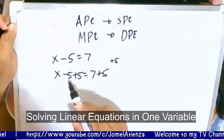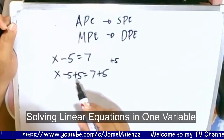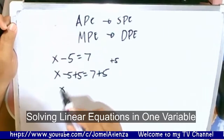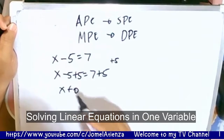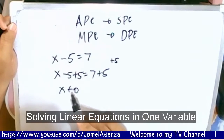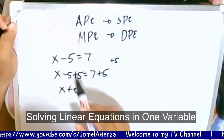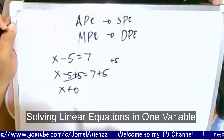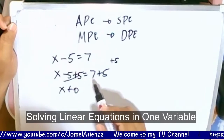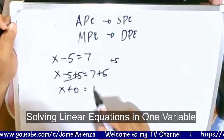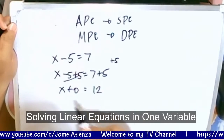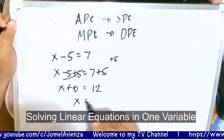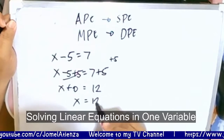So this is what we call the additive inverse. So x plus 0 — x is now isolated. And then on the other side of the equation, we have 7 plus 5 which is 12. So therefore, x is equal to 12.